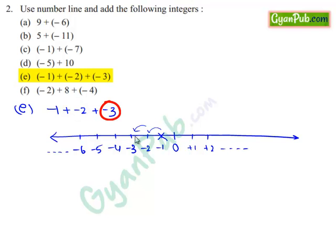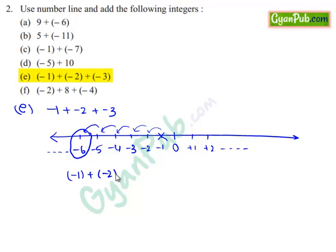We reach minus 3 on this number line. Again we are adding minus 3, which means we move 3 steps to the left of minus 3: 1, 2, 3. We reach minus 6. So, when we add minus 1 and minus 2 and minus 3, we reach minus 6 on this number line.